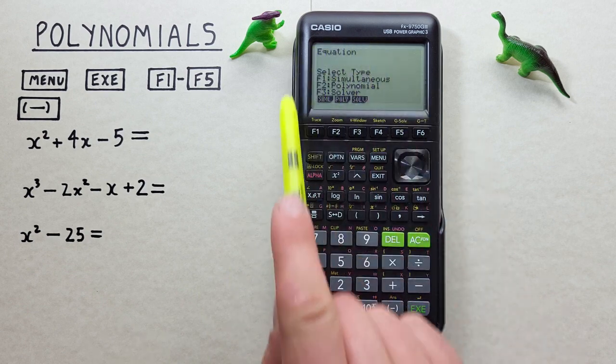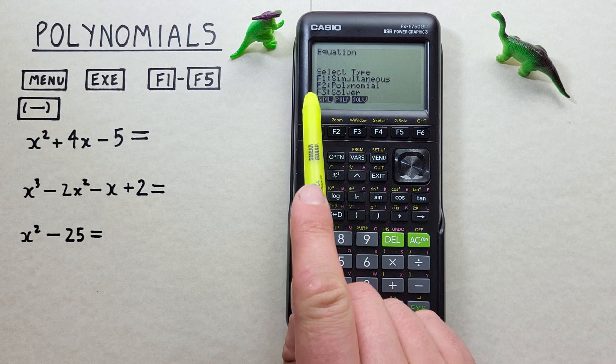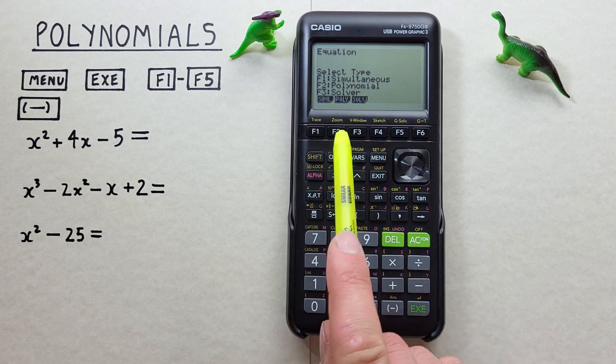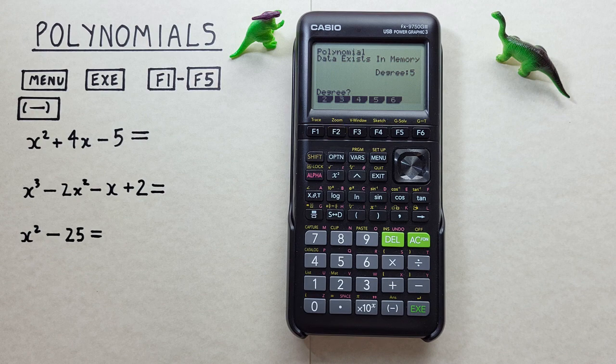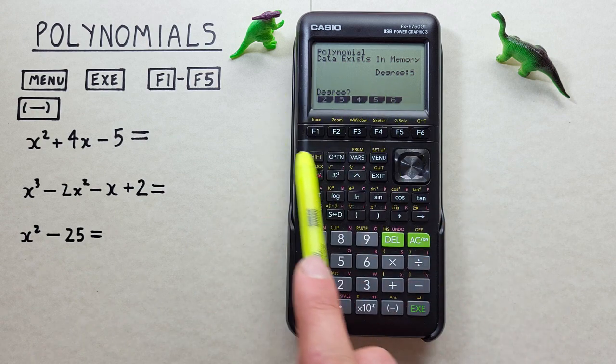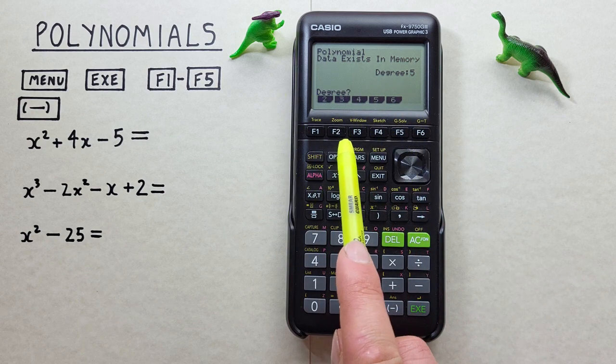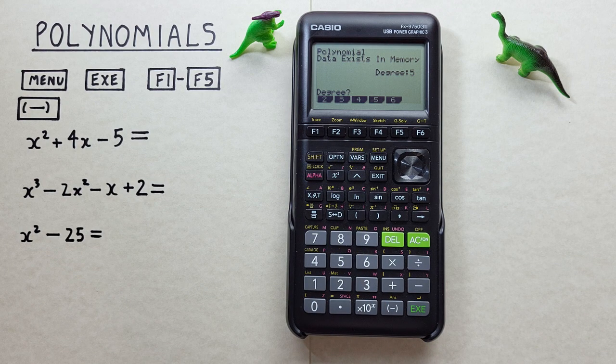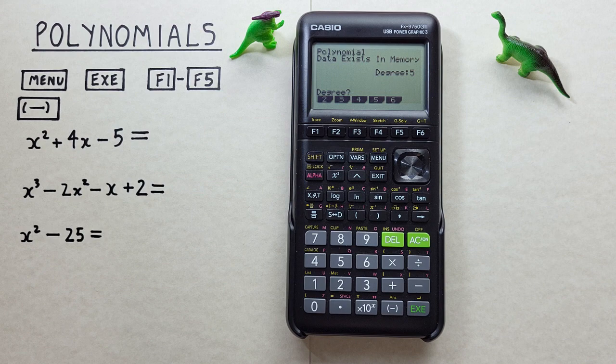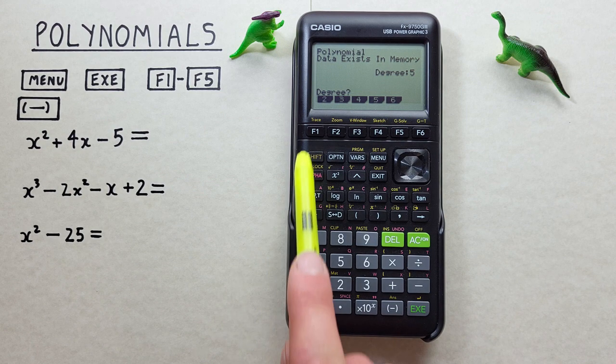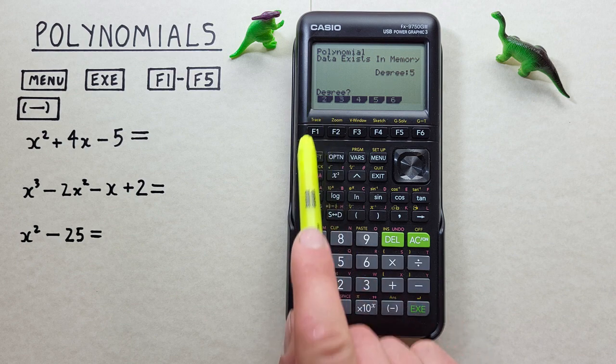That brings us to this menu here. We're doing polynomials so we want to choose F2. That brings us to this screen where it asks us what degree you want to solve for. In a polynomial the degree is determined by the largest power of X. So in this example X to the power of 2 is our largest power of X, telling us we have a degree of 2. So we select degree of 2 with the F1 here.